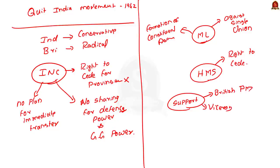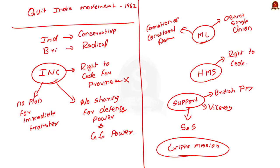This is all you need to know about the Cripps Mission — I think I have covered every nook and corner of it. Before moving to the mains question discussion, I want a suggestion from you: in future discussions based on previous year prelims questions, should I take one question and discuss the entire topic elaborately, or should I limit the discussion and cover three or four questions? Please post your suggestions in the comment section.